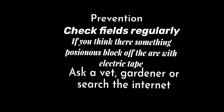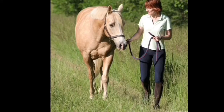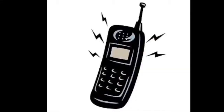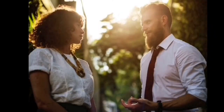If you suspect your horse has been poisoned, here's what to do: number one, stay calm; number two, quickly remove your horse from the source of the poison; number three, call your vet immediately and tell them when, where, and how the poisoning occurred; number four, if needed, collect the source of the poison in a plastic bag to give to your vet to analyze; and number five, follow your vet's advice for treatment extremely carefully.